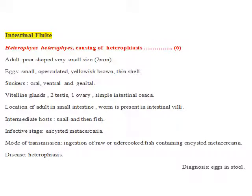Now our second species, which can cause RGI by intestinal fluke, is Heterophyes heterophyes, which can cause Heterophyiasis. About its criteria, the adult worm can appear very small in size, about 2mm. The egg is small and operculated, having an operculum colored yellowish to brown with a thin shell.